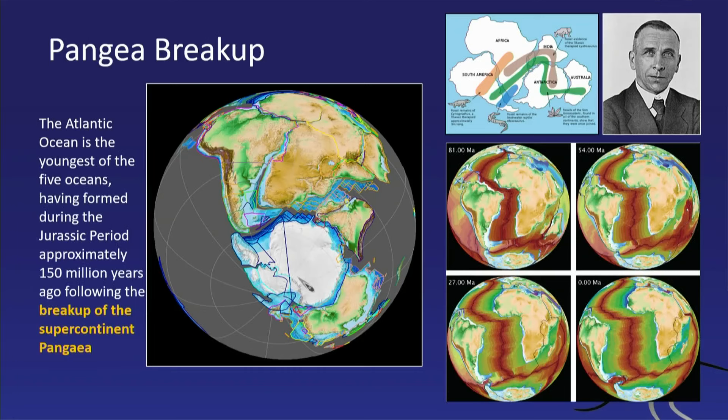Here we see a little reconstruction of Pangaea in the central image — all the continents together back in the Jurassic era. On the right-hand side we see a reconstruction through time, showing the opening of the Atlantic. It started in the south like a zipper, unzipping towards the north. So the ocean crust is a little older in the southern part of the Atlantic than in the northern part.